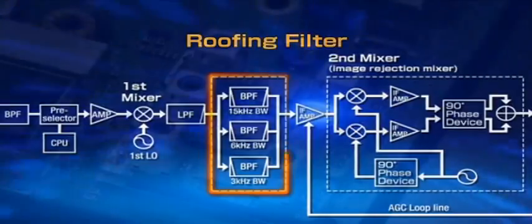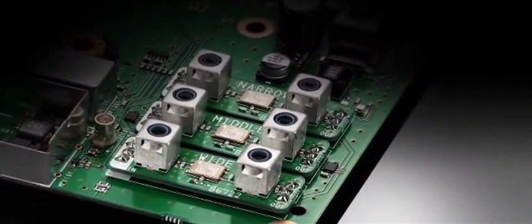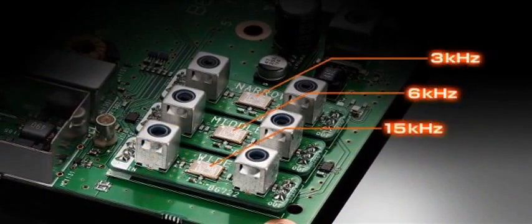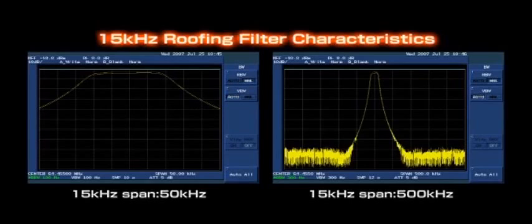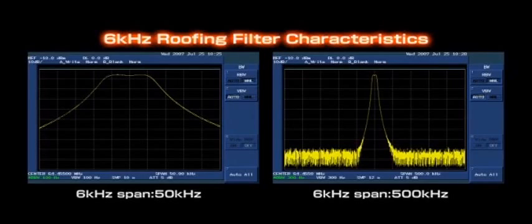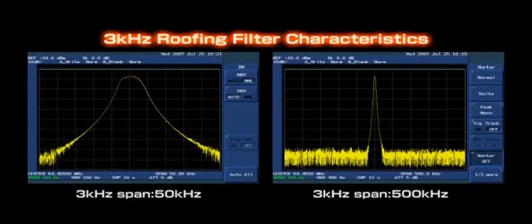The IC7700 employs three roofing filters of 15, 6 and 3 kHz before the first amplifier. ICOM ordered special customized high-specification devices to improve IMD and achieve better impedance characteristics. As a result, the 3 kHz roofing filter provides approximately 134 dB of blocking dynamic range and allows you to pull out a weak signal while blocking strong adjacent signals.